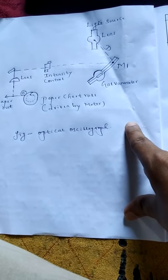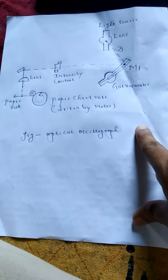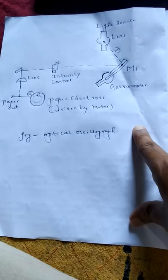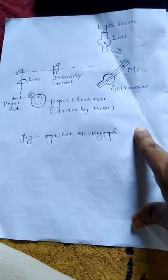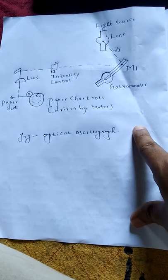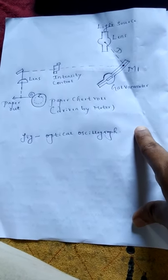Fourth point, the recording spot sensitivity is controlled by adjusting light intensity of the source. The paper movement speed is suitably altered depending on the frequency of the signal to be recorded.